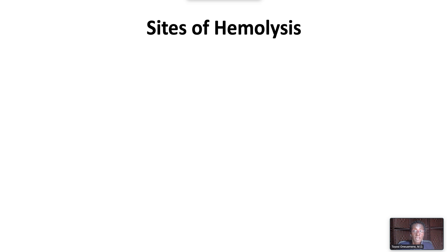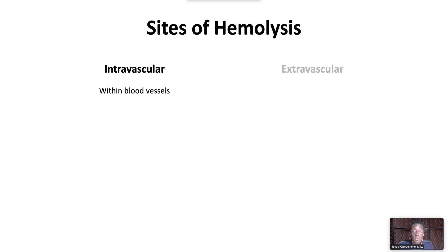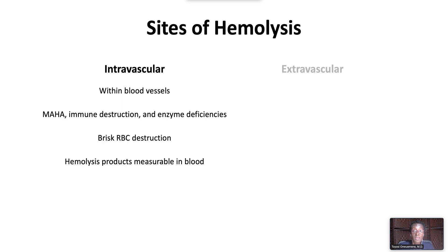The site of hemolysis can be intravascular, extravascular, or both. Intravascular hemolysis occurs within blood vessels and is typical of microangiopathic hemolytic anemia, complement-mediated hemolysis, and enzyme deficiencies like G6PD deficiency. Intravascular red blood cell destruction is typically brisk, and the hemolysis products spilled into the vasculature are readily measured in the blood. The presence of free hemoglobin in the blood can lead to acute renal failure.